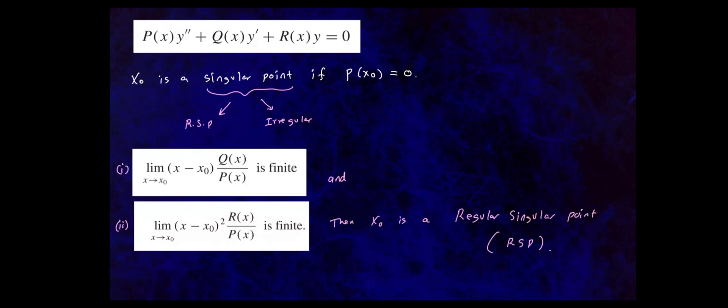An irregular singular point simply means that one of these limits fails — it gives infinity or negative infinity — so we immediately classify that singular point as irregular.